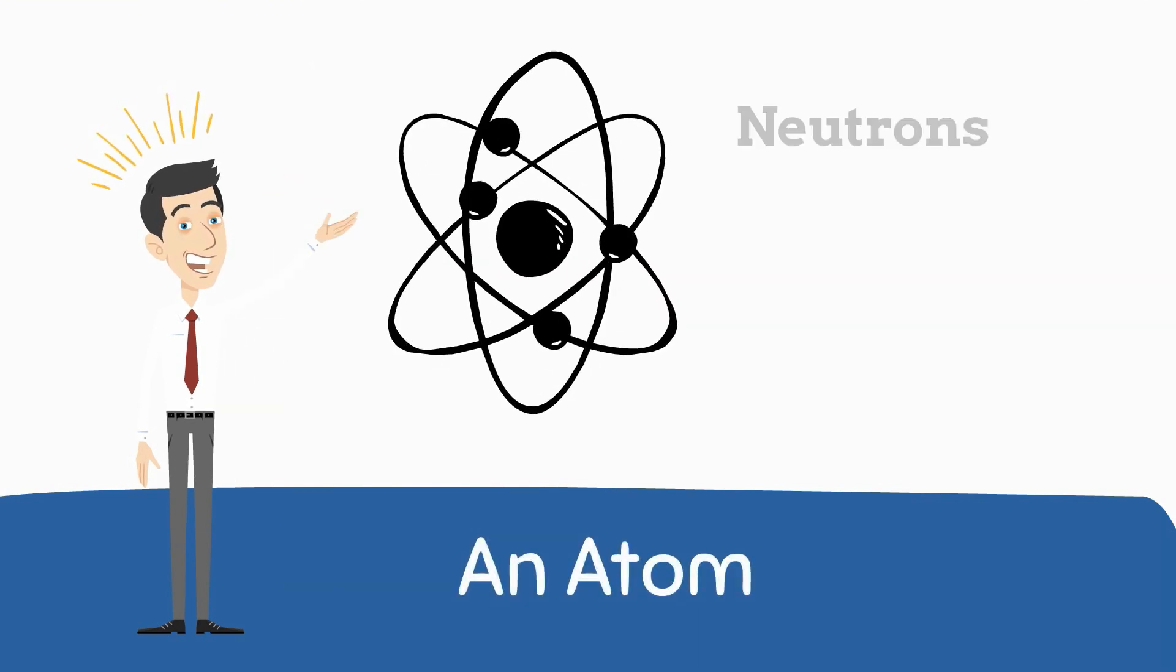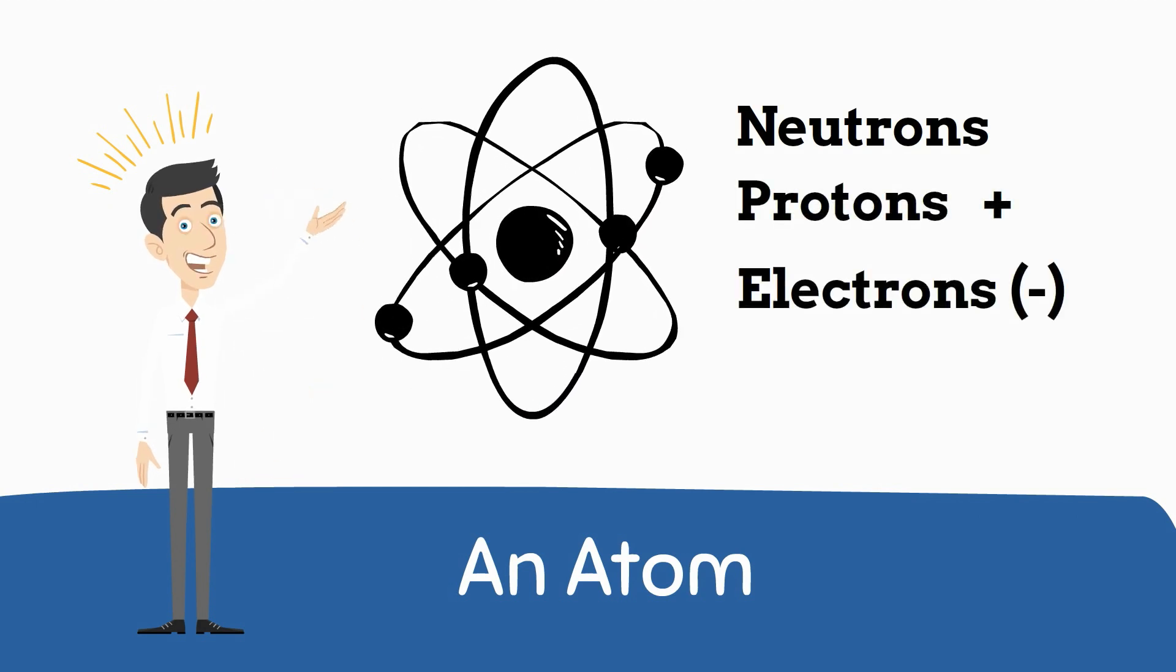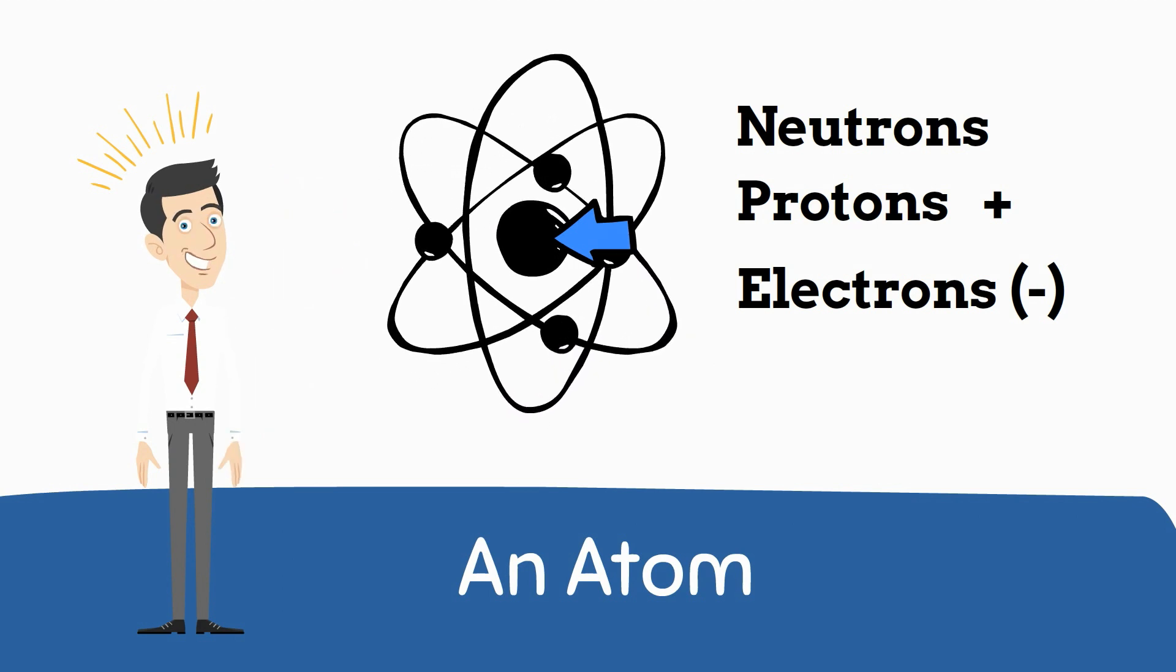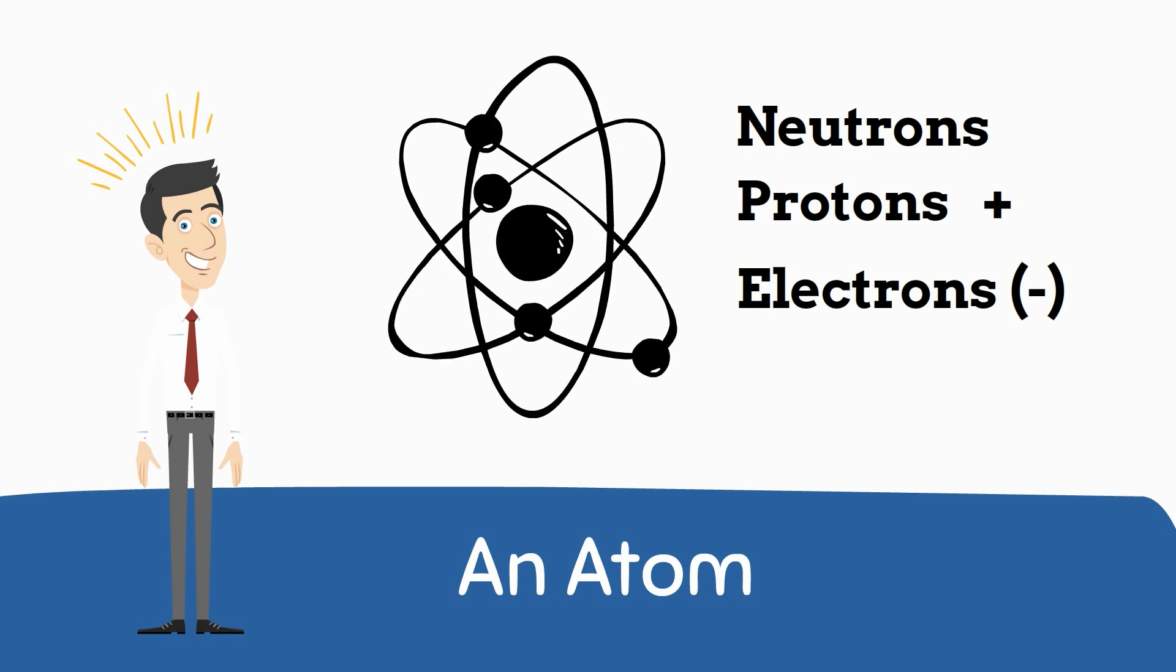Atoms are made up of neutrons, protons, and electrons. The nucleus of an atom is made up of positive protons and neutrons, and electrons are found surrounding the nucleus in shells.